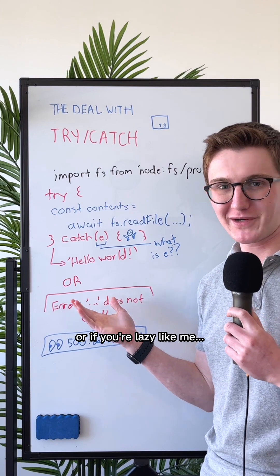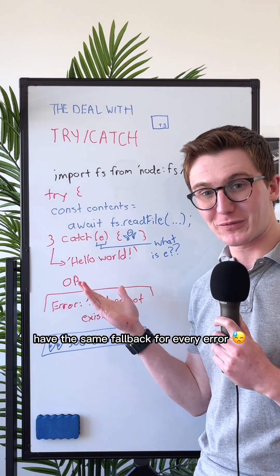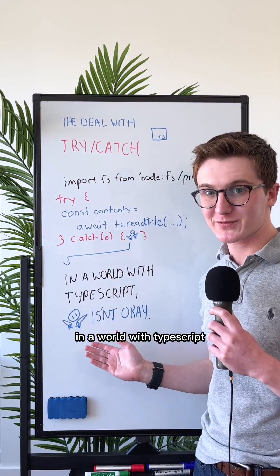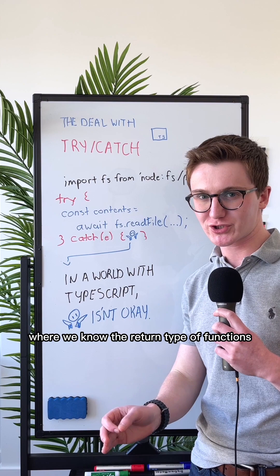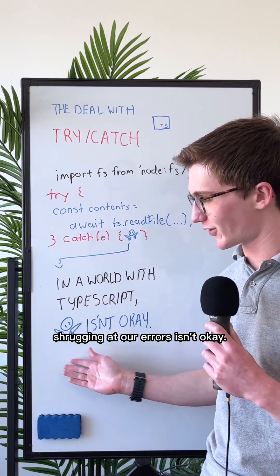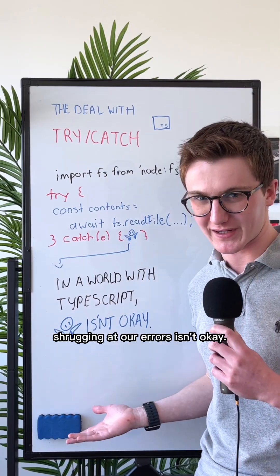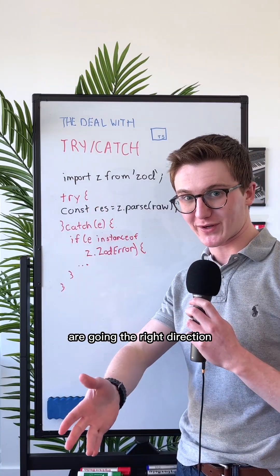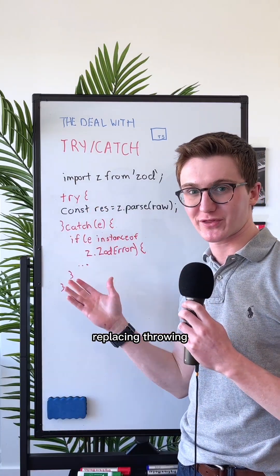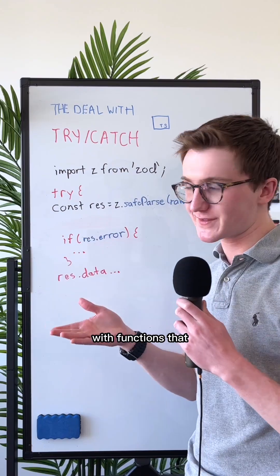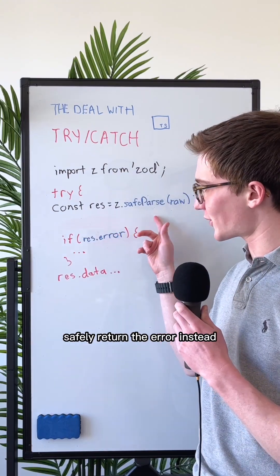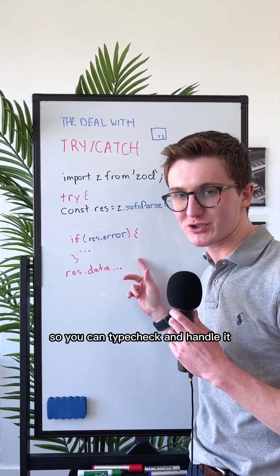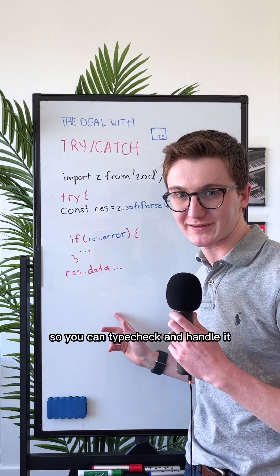You probably want to know what the error is, but if you're lazy like me, you use the same fallback for every error. In a world with TypeScript where we know the return type of functions, shrugging at our errors isn't okay. Libraries like Zod are going the right direction — replacing throwing with functions that safely return the error instead, so you can type check and handle it.